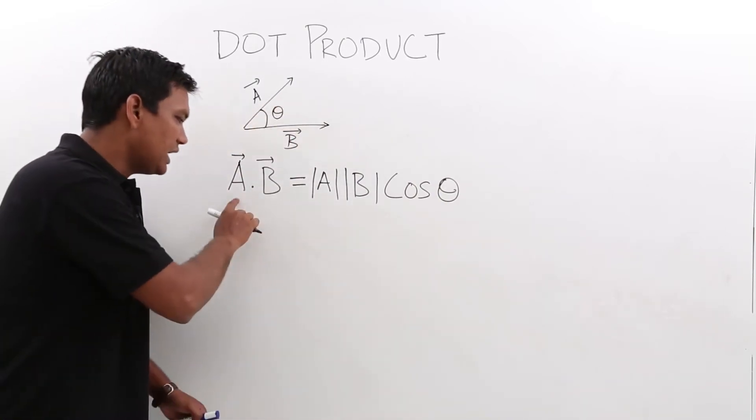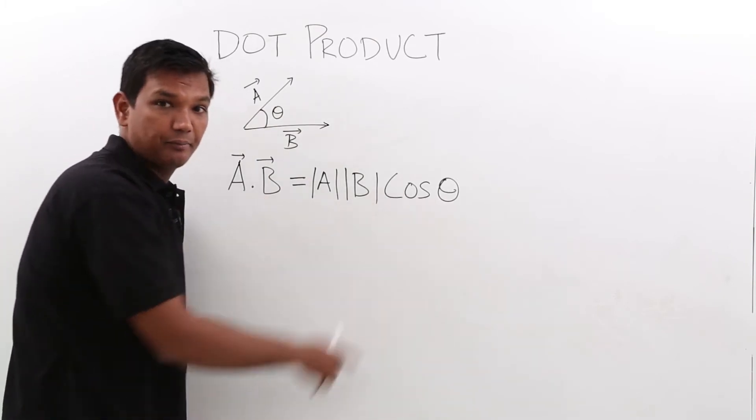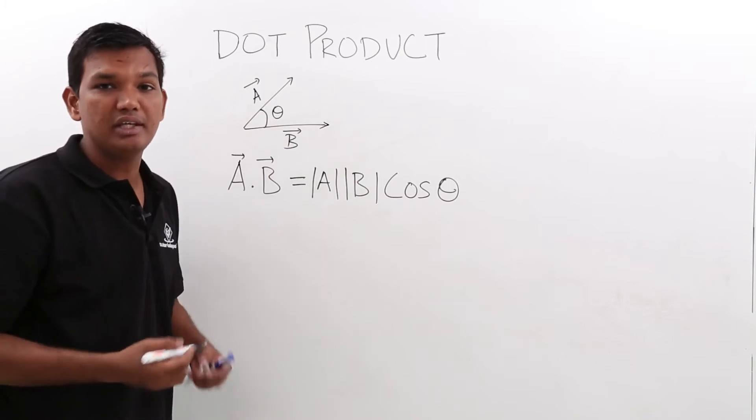So in general, A dot B vector is nothing but mod A, mod B cos theta, where theta is the angle between the A and B vector.